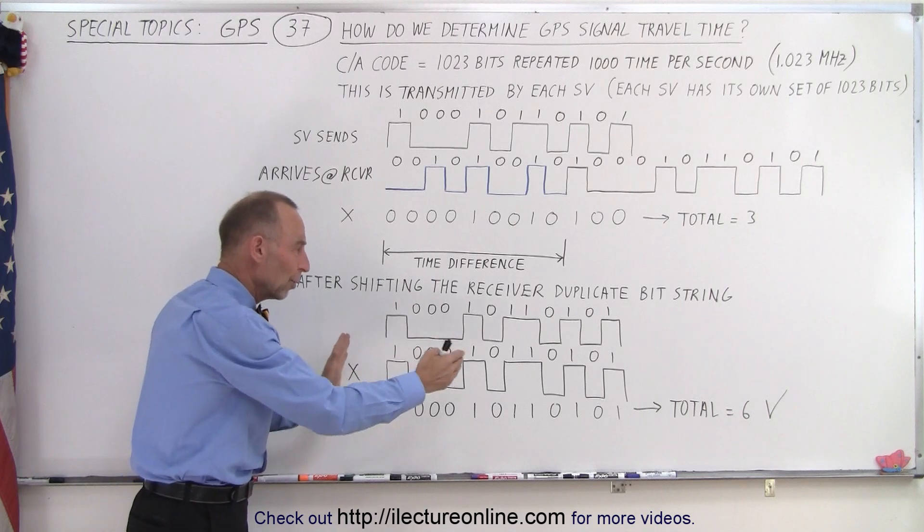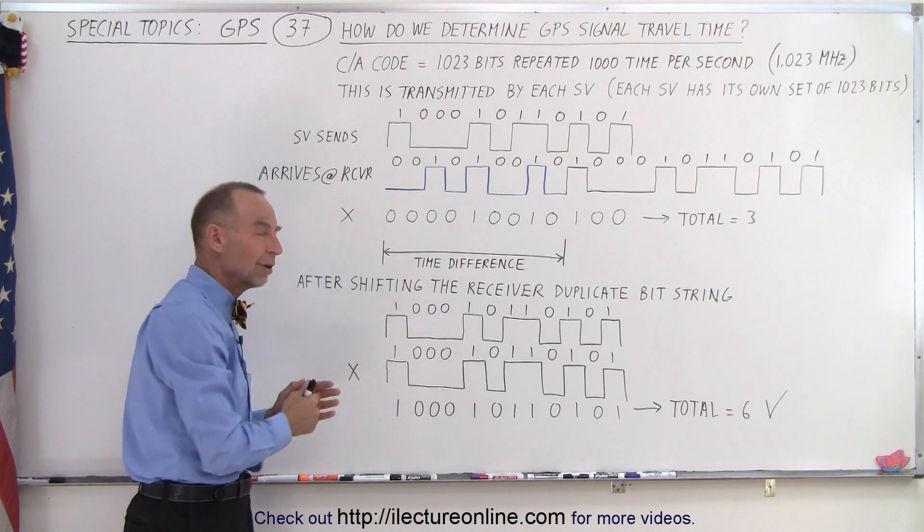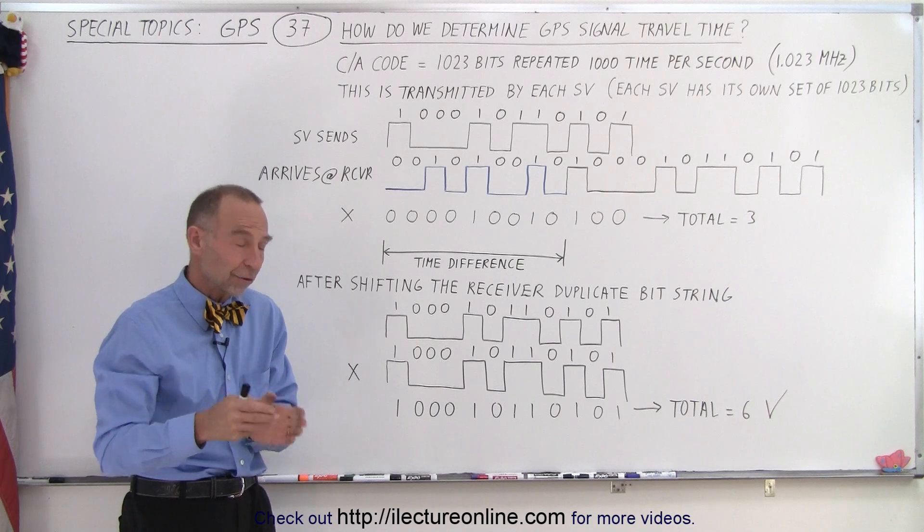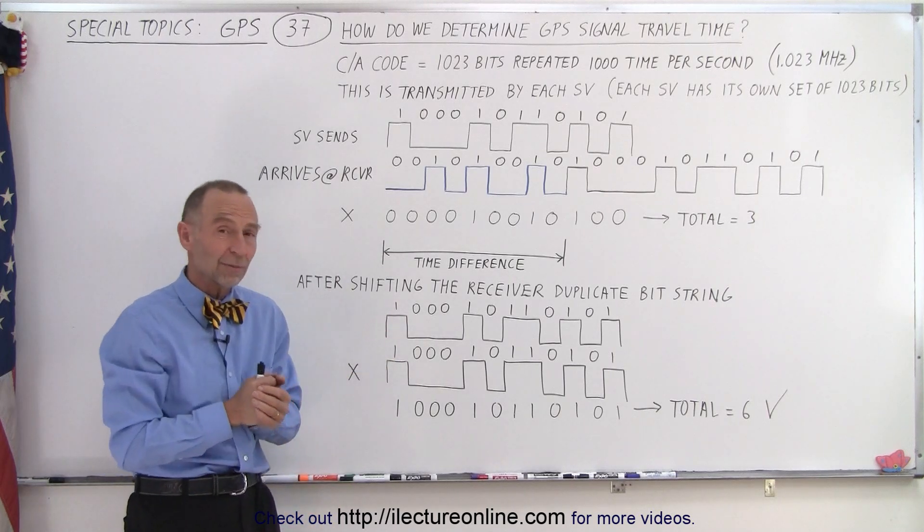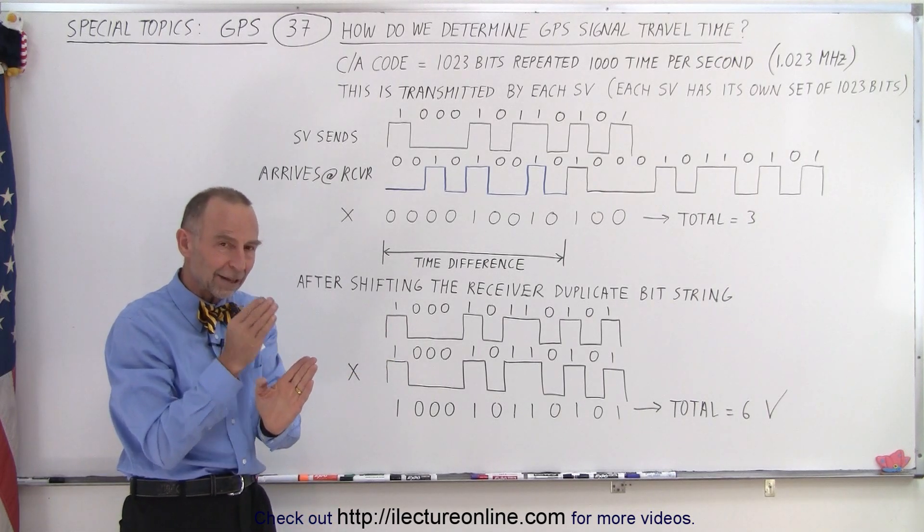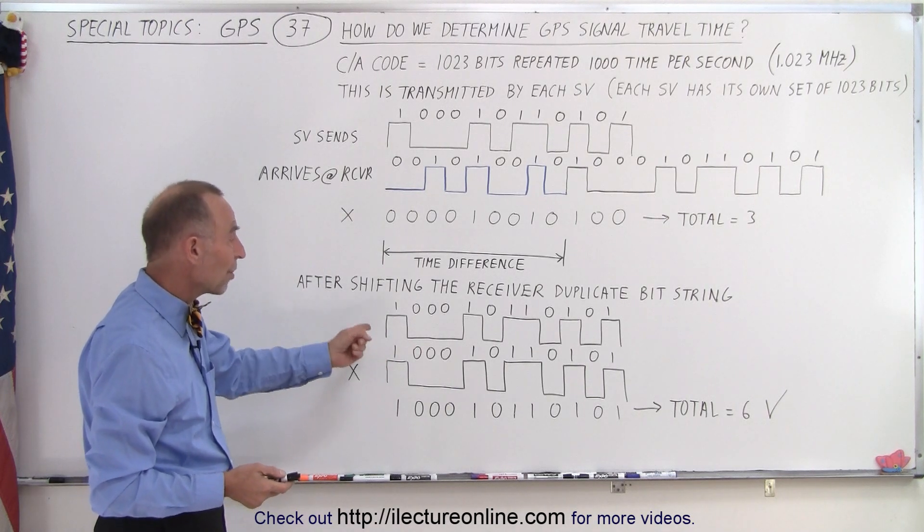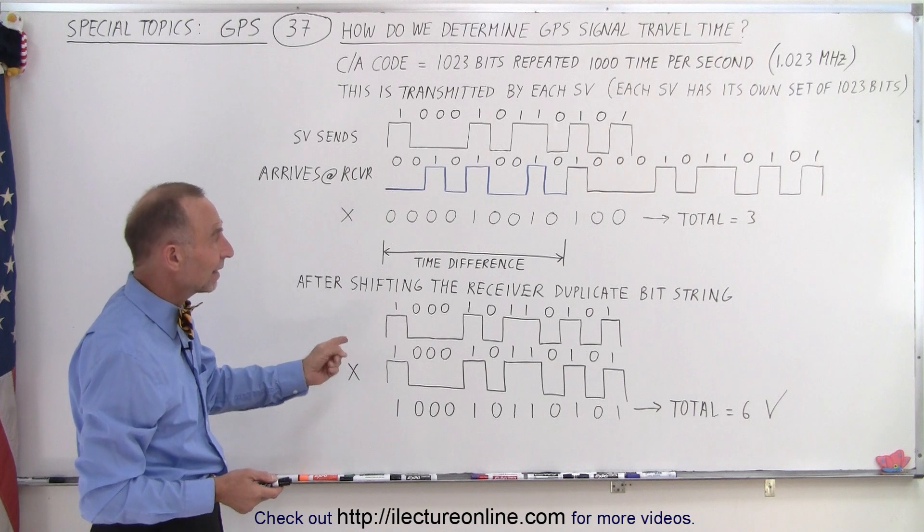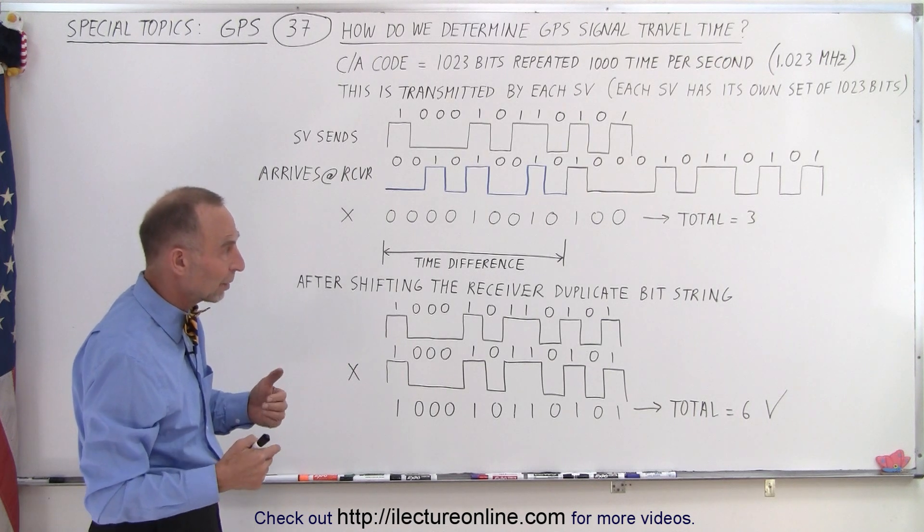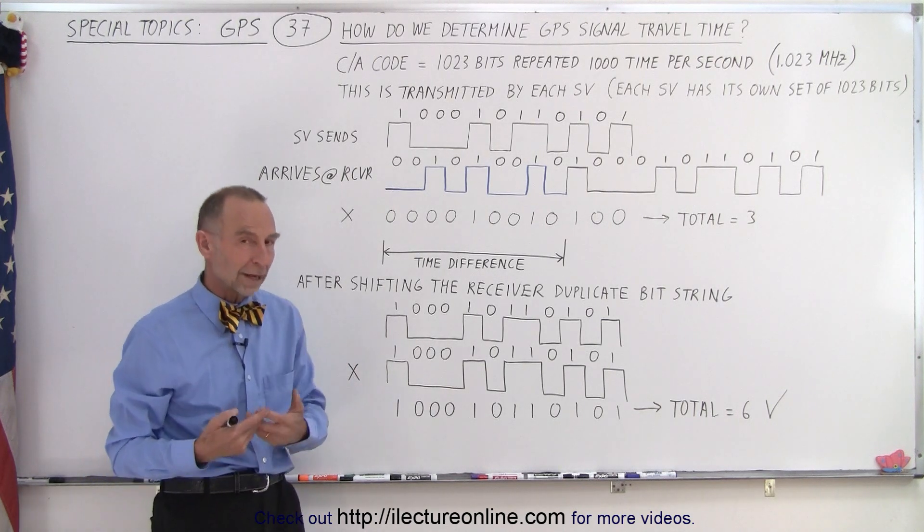Then we get the rest of the alignment by moving the bit string over in the receiver to match up with the bit string that received from the satellite. Once that's done we get that final result and then notice we're now as accurate as one one thousandth of a millisecond in time duration which will give us about one millionth of a second or one microsecond.